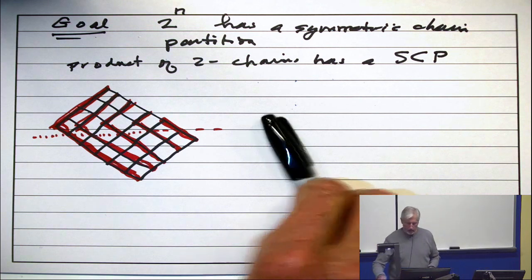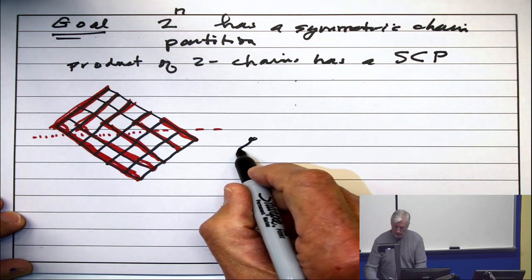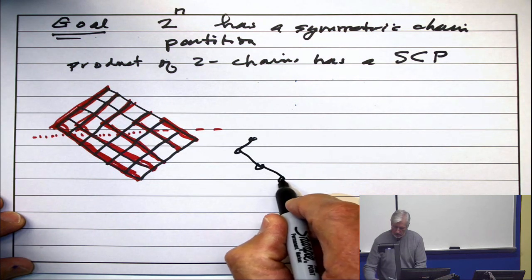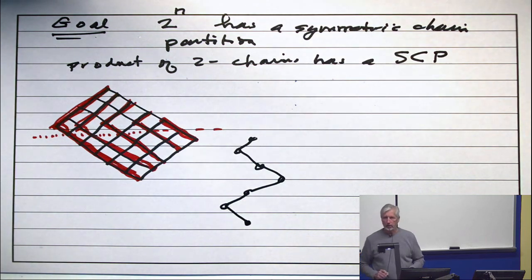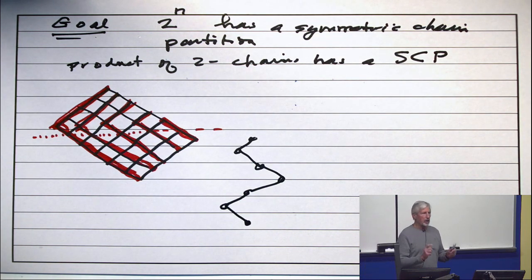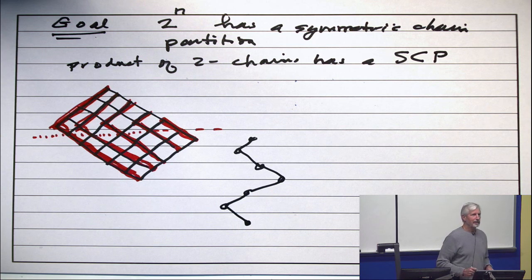And, in particular, here is a special case. A special case which is of great importance. Suppose you have a chain like this. Does that have a symmetric chain partition? It is a chain. The answer is yes.